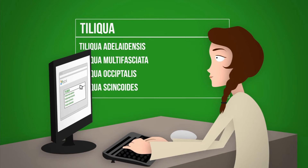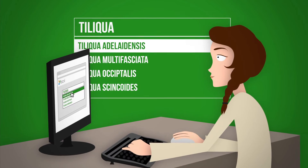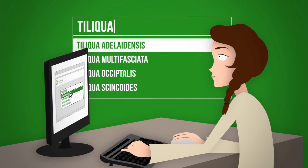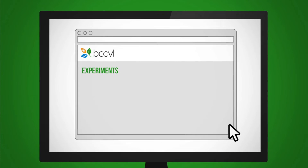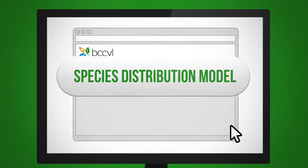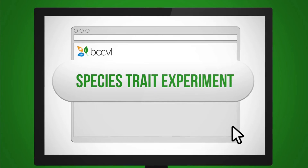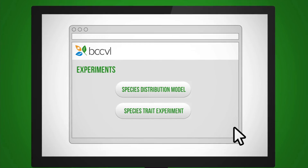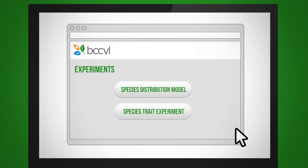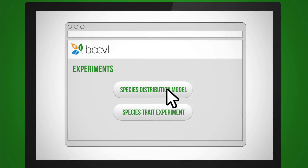Firstly, Michelle downloads the pygmy blue-tongued dataset through the BCCVL. From this point, Michelle now has the option to run a species distribution model or a species trait experiment. As Michelle is interested in where pygmy blue-tongues can be found, Michelle runs a species distribution model.